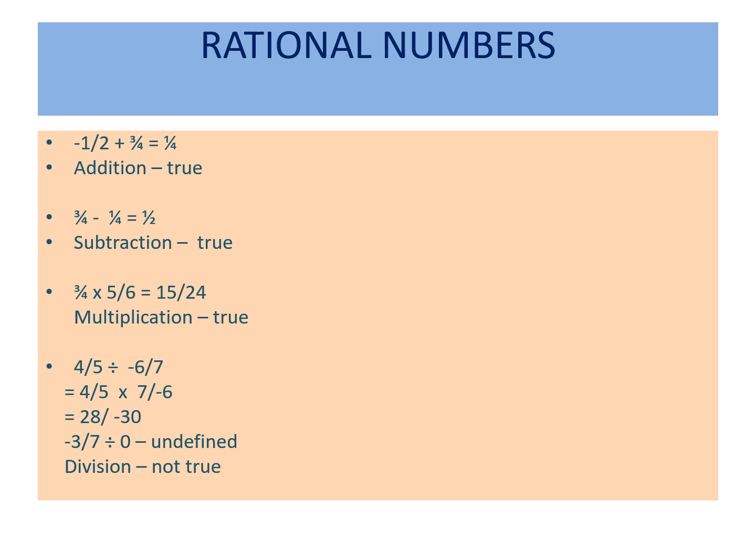However, consider −3/7 ÷ 0. Zero is a rational number, but −3/7 ÷ 0 is undefined. So division is not always true for rational numbers — rational numbers are not closed under division.